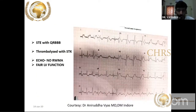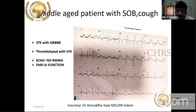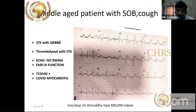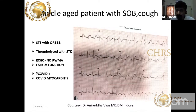A middle-aged male presented with RBBB and was thrombolyzed at an outside center. Echo showed no regional wall motion abnormality and LV function was fairly good. In this pandemic era, you should always check for COVID — this patient turned out to be COVID positive: COVID myocarditis. COVID myocarditis involves the basal portion of the heart preferentially. A good article in NEJM reported COVID patients presenting like anterior MI mimic, but on angiogram there is no obstruction of the coronary artery.